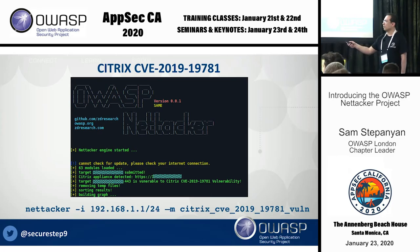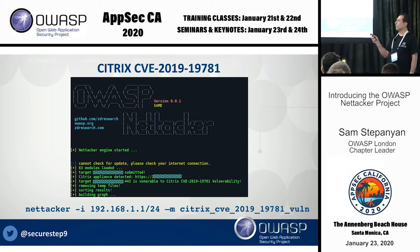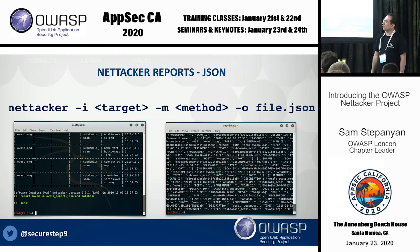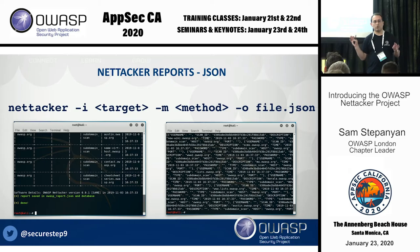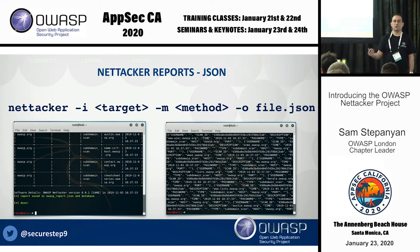The command to use the Citrix module: provide nethacker with a target, define the IP range, and specify the module as citrix_cve_2019_19781. This is very useful. Because this tool is for automation, when it finishes it produces results not just in HTML and graph form, but also in JSON format, which is machine-readable and allows you to integrate NetAttacker with other tools.